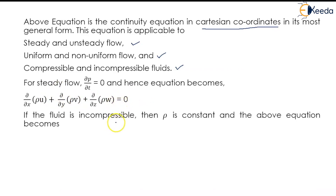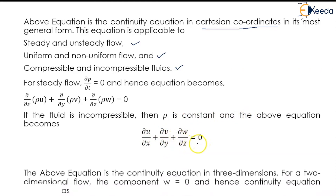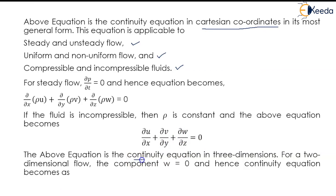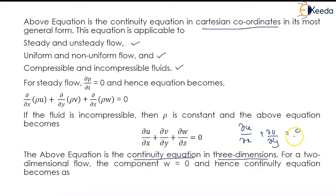If the fluid is incompressible, then rho is constant and the equation becomes ∂u/∂x + ∂v/∂y + ∂w/∂z = 0. This is the continuity equation in three dimensions. For two-dimensional flow the component w becomes zero, so the equation reduces to ∂u/∂x + ∂v/∂y = 0.